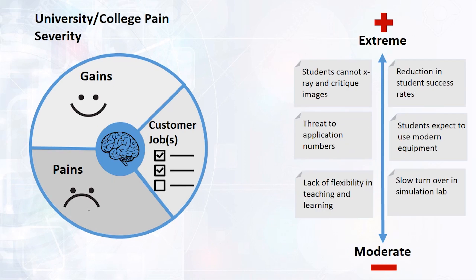Pains experienced include a reduction in student applications as students look for training that includes flexibility in teaching and learning methods. A reduction in student success as students cannot use decommissioned non-live machines to x-ray and critique their images. Even where the physical machines are live, the plastic body parts are not realistic and they certainly cannot practice on humans.